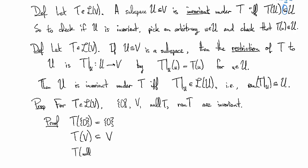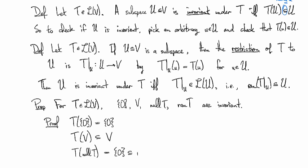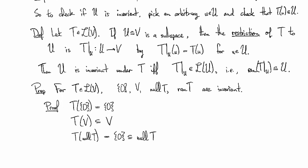And then, if we look at the null set, T of the null set. Well, the null set is everything that T sends to 0. So T of the null set is exactly the trivial space. And the trivial space is contained in the null space of T because the null space is a vector space.